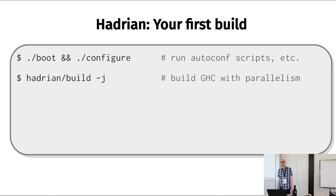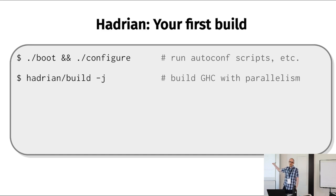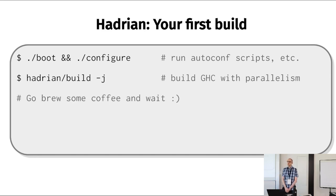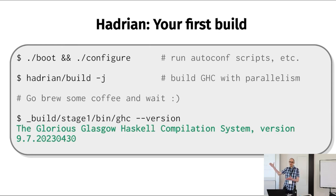The next step is to actually run Hadrian. There's a script under the Hadrian subdirectory called 'build', and that's your one-stop shop for everything Hadrian. The most common flag is -j for maximum parallelism, or -j4 to limit to four cores if you're worried about throttling your machine. Once you start building, go do something else for a while — it's going to take a while. After you return, you should have a working version of GHC under _build/stage1, and you can test it by running GHC with --version.